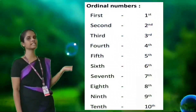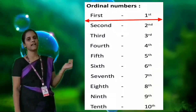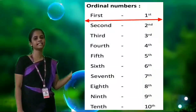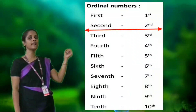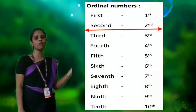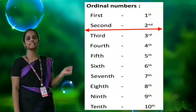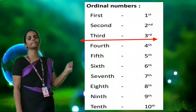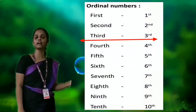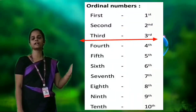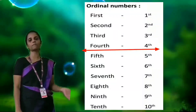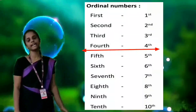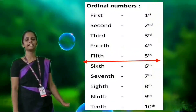Can you see that? First — F-I-R-S-T. Write number 1 and S-T on top. Second — S-E-C-O-N-D. Write number 2 and N-D on top. Third — T-H-I-R-D. Write number 3 and R-D on top. Fourth — F-O-U-R-T-H. Write number 4 and T-H on top.